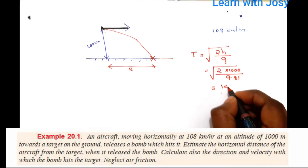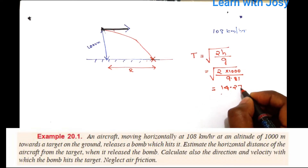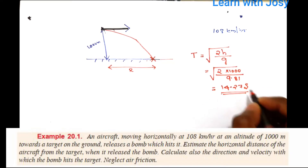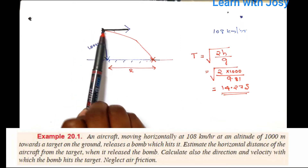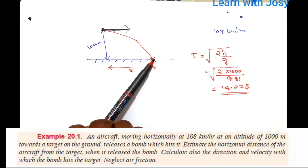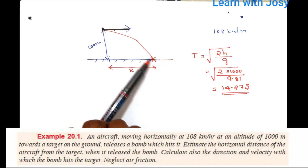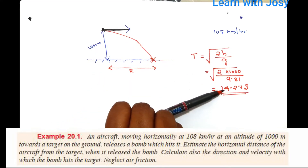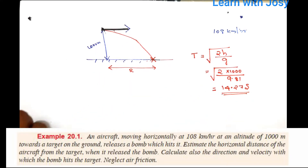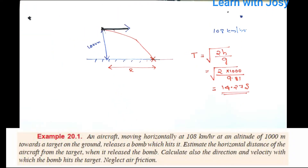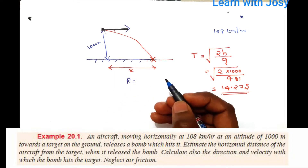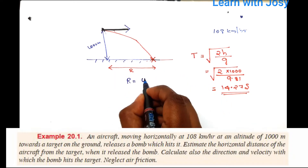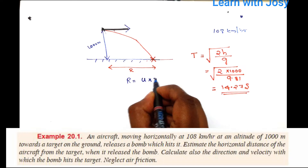This gives t approximately equal to 14.27 seconds. Now we have to calculate the range. The range R = u × t, where u is the initial horizontal velocity.